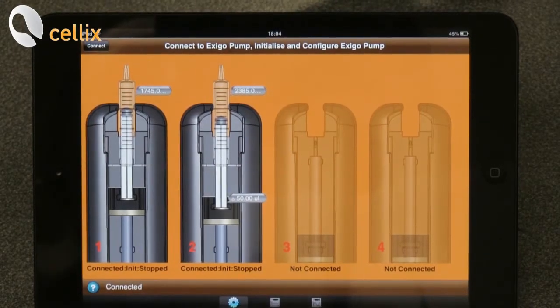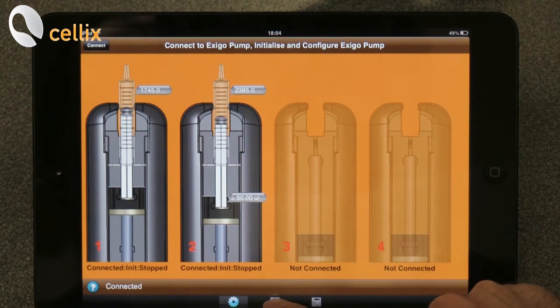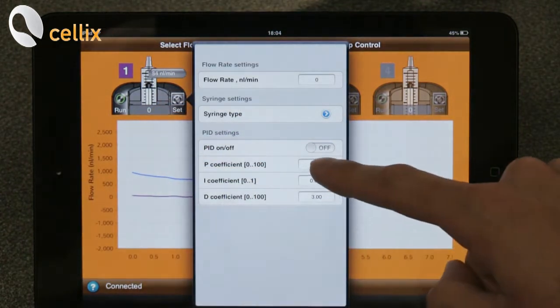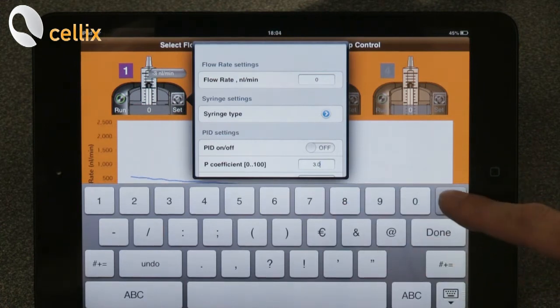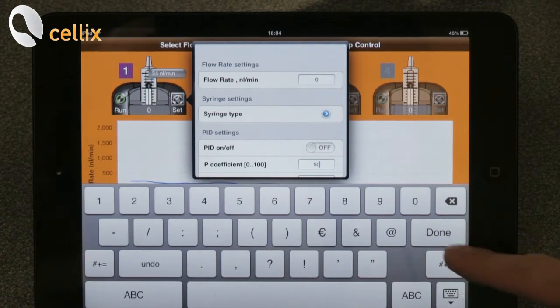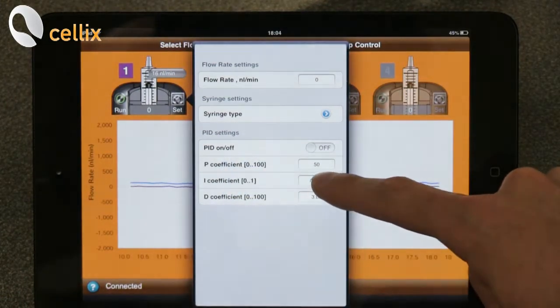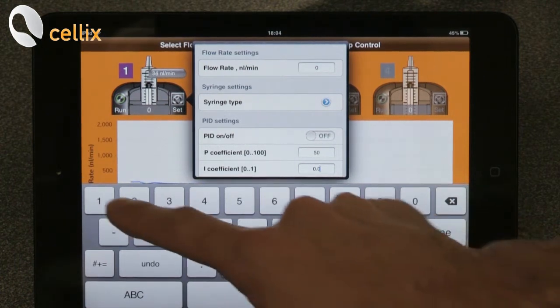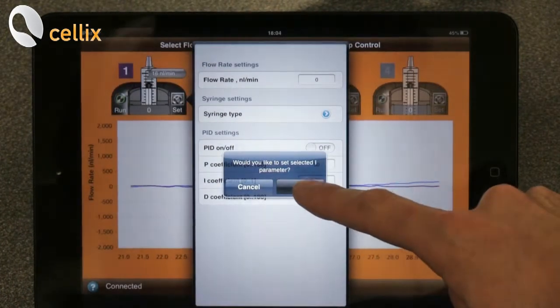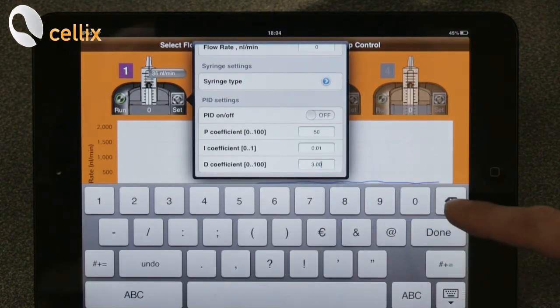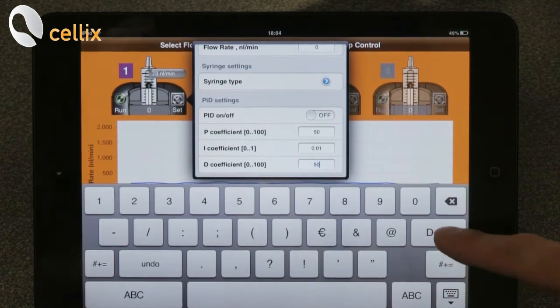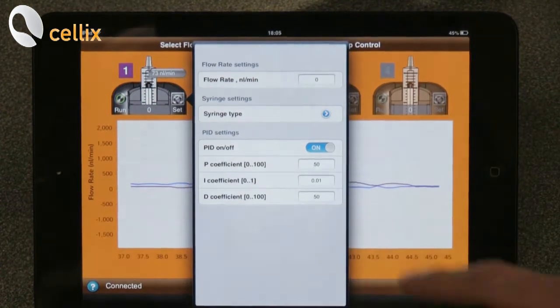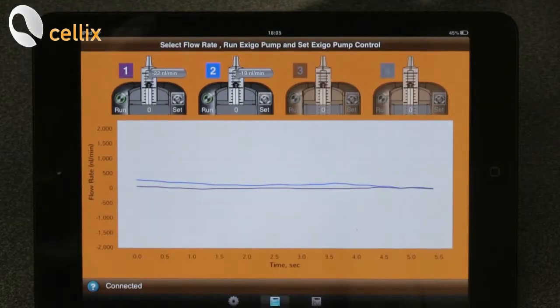We can proceed now with the settings of the PID. So just click on run and then set. Just change these values to 50 for the P coefficient. And then we can turn it on. And then again 0.01 and 50 for the I coefficient. And then we can turn it on. Similar operation can be done also for the second pump.